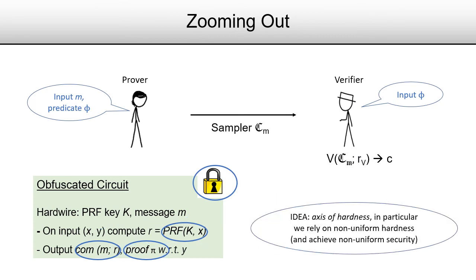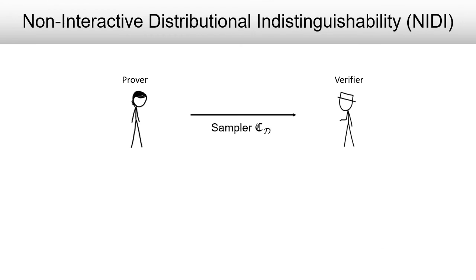Our main idea is to rely on a different axis of hardness. In particular, we develop a new technique where we rely on non-uniform hardness and at the same time achieve non-uniform security. This is all from standard assumptions: IO and non-uniform security of one-way functions. A NIDI is simply a generalization of these techniques to encapsulate what you can do more generally.